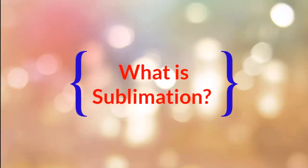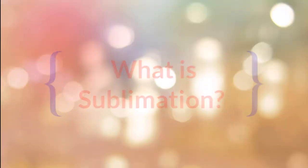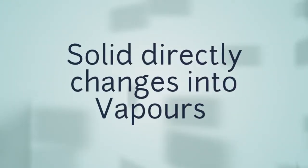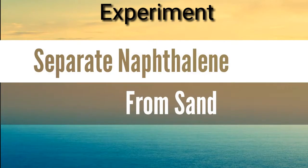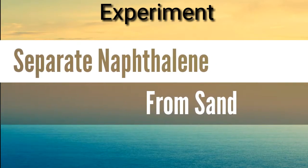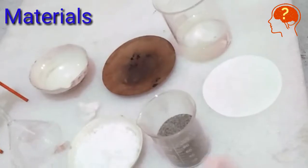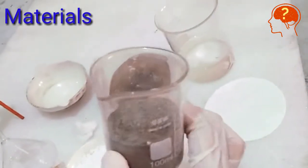You should know first what is sublimation. Sublimation is a process in which solid directly changes into vapors without going into liquid state. Let's separate naphthalene from sand by using the process of sublimation. Materials required: sand,